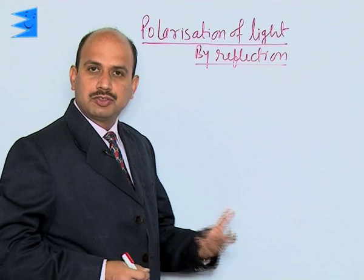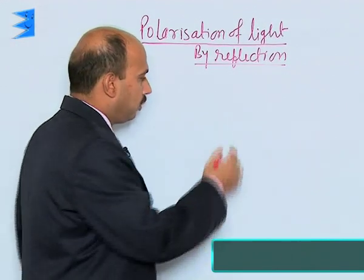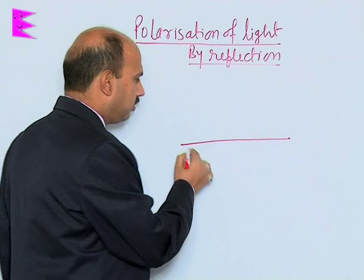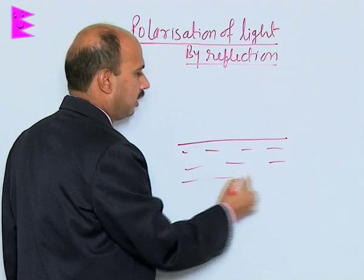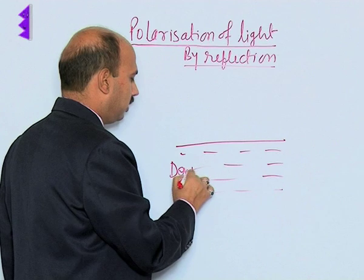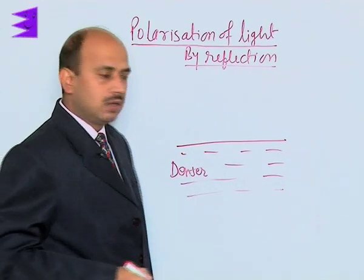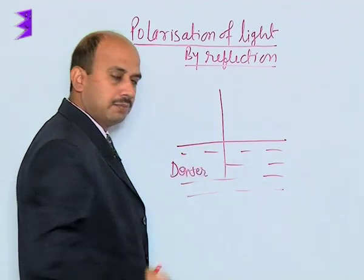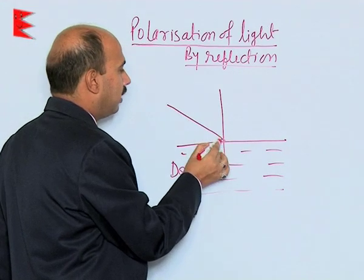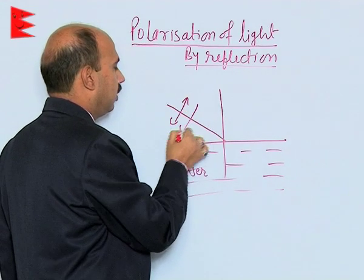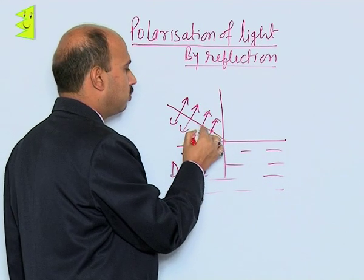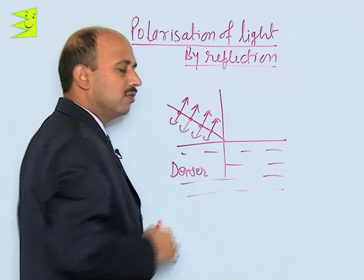To see polarization of light by reflection, suppose we have taken this interface, and here I have taken a denser medium. A normal is drawn and unpolarized light is coming from here, which has two components: one is in the plane of incidence, and another is perpendicular to the plane of incidence.